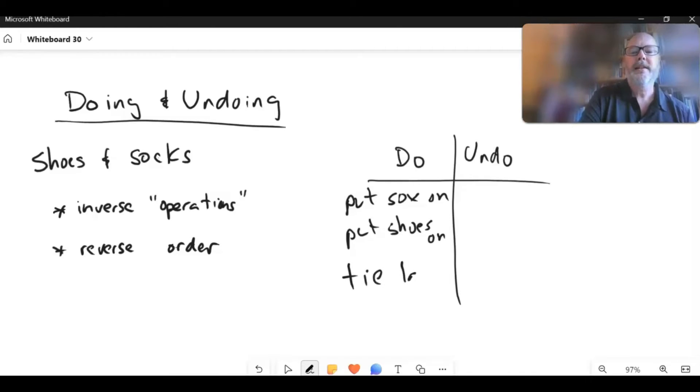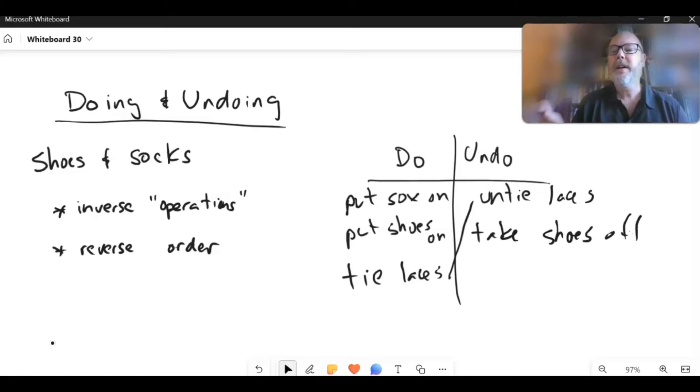And then we say, well, how do we then undo all that? And the first thing we go for is the reverse. Reverse order and reverse or inverse operations. So, untie laces, take shoes off, and take socks off. That way we're seeing the inverse or the opposite operations done in the reverse order.